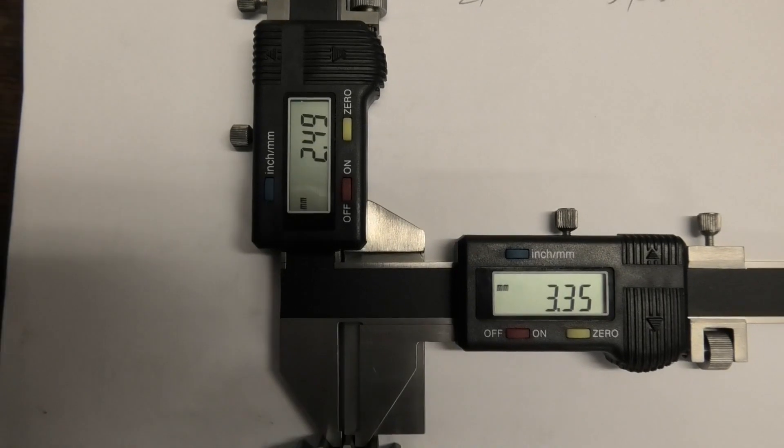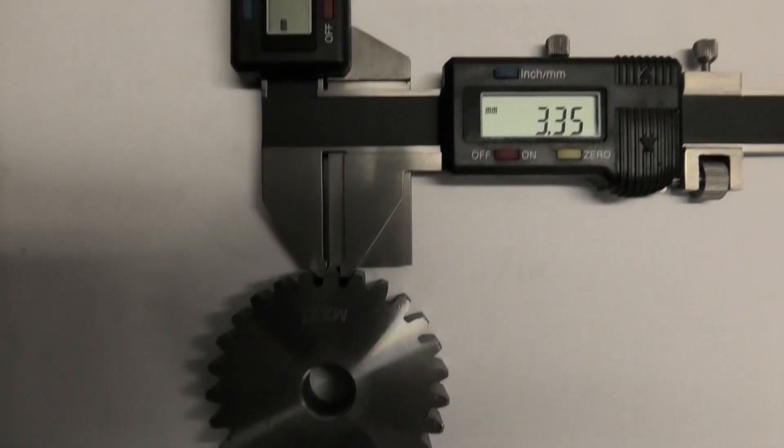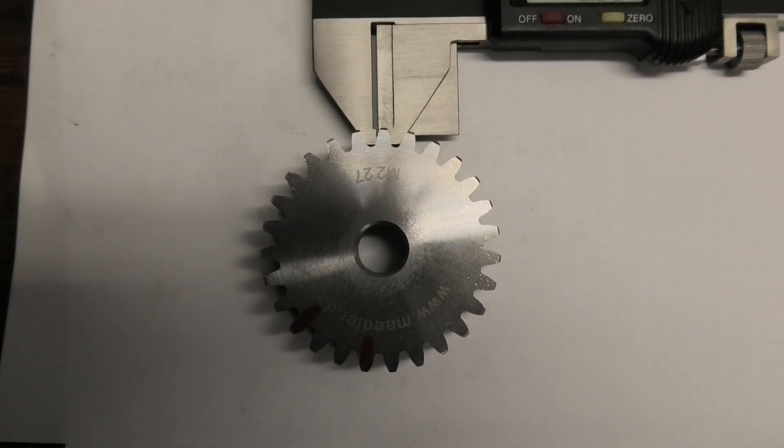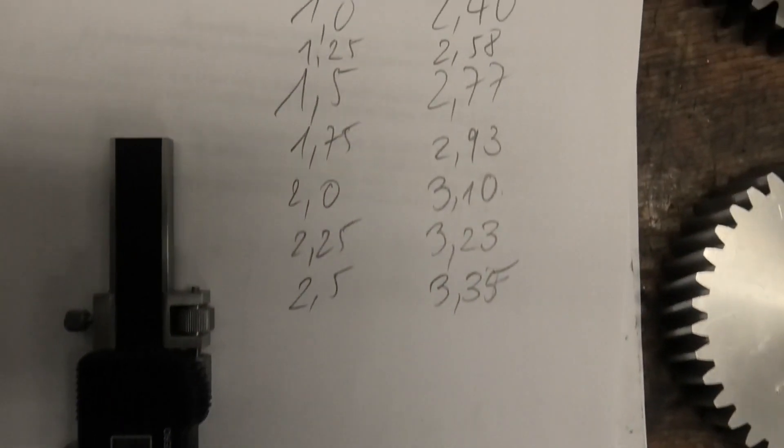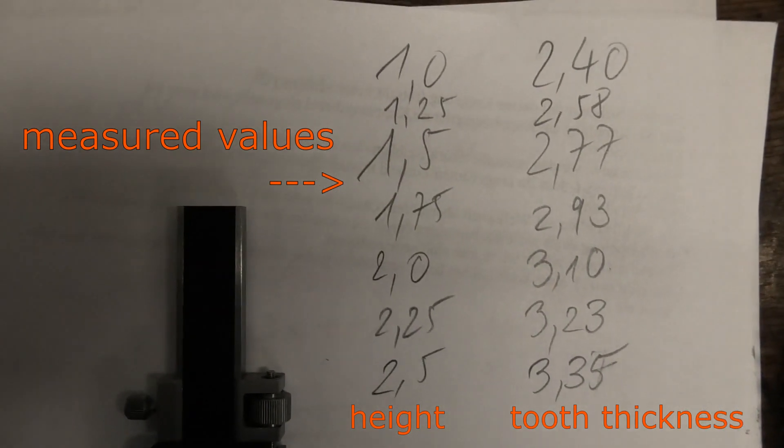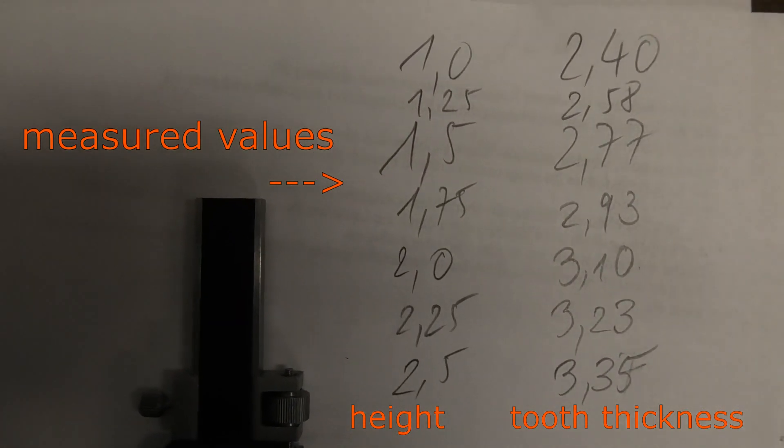Let us investigate our first sprocket. Its parameters are known so we can test the procedure. 27 teeth, module 2, pressure angle 20 degrees, no profile shift, helix angle 0.